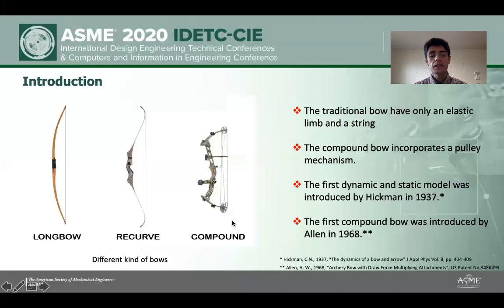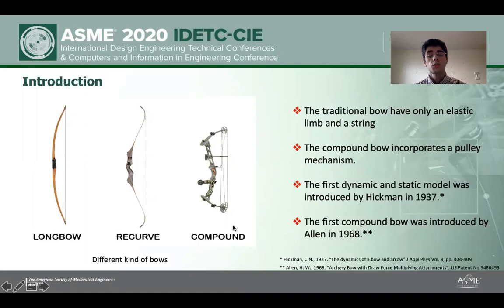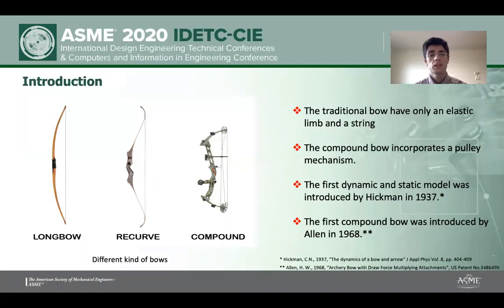The most advanced and most efficient bow is the compound bow, which you can see in this picture. The first dynamic and static model was introduced by Hickman in 1937, and it is a very fundamental paper. The first compound bow was introduced by Allen in 1968.